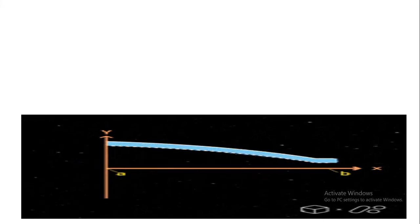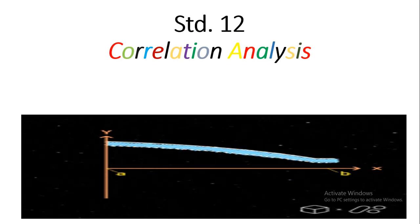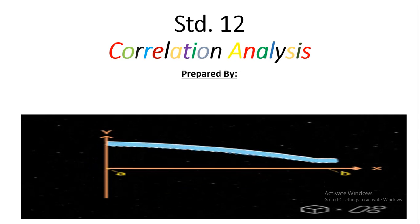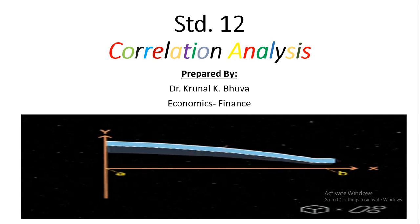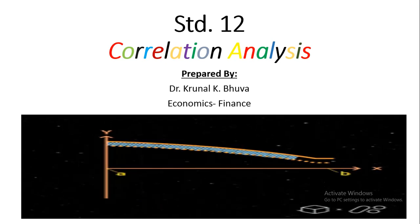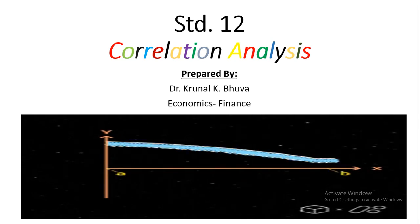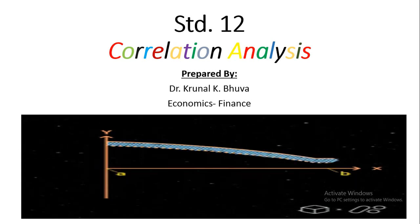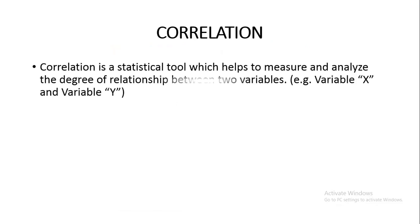Hello friends and welcome to this another part of Standard 12. Today we will talk about a concept called correlation analysis. Correlation is a relationship between two variables. There are always two variables and our job is to find out what is the relationship between these two. There can be either positive correlation, negative correlation, or no correlation. So let us start with correlation and its meaning.